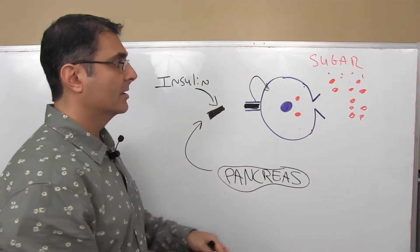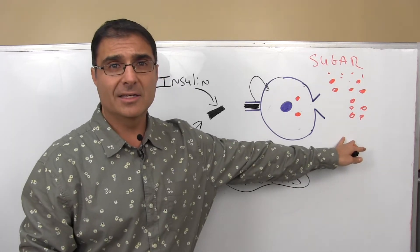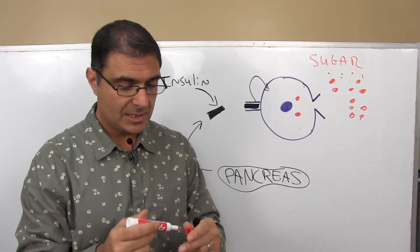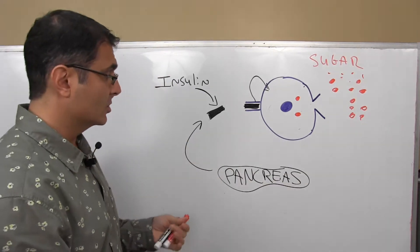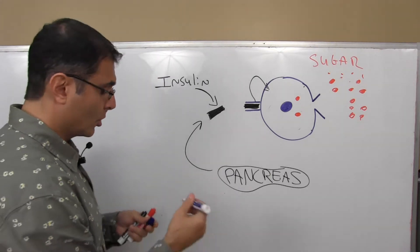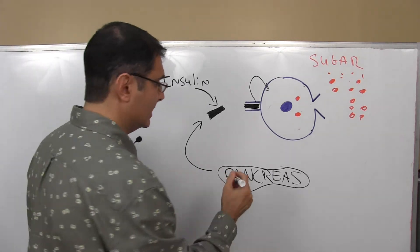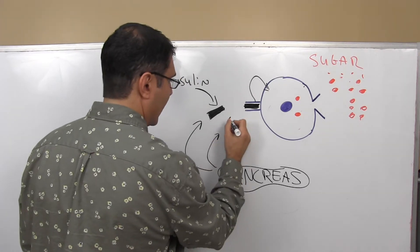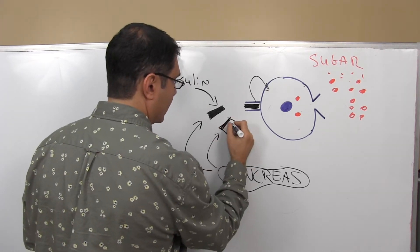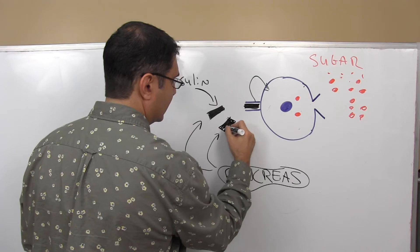So what's happening now? Our blood sugar is high. So now what happens is the body goes, wow, the blood sugar is still high. So we're going to need to then go ahead and make more insulin to correct this blood sugar problem. So the body makes more insulin.